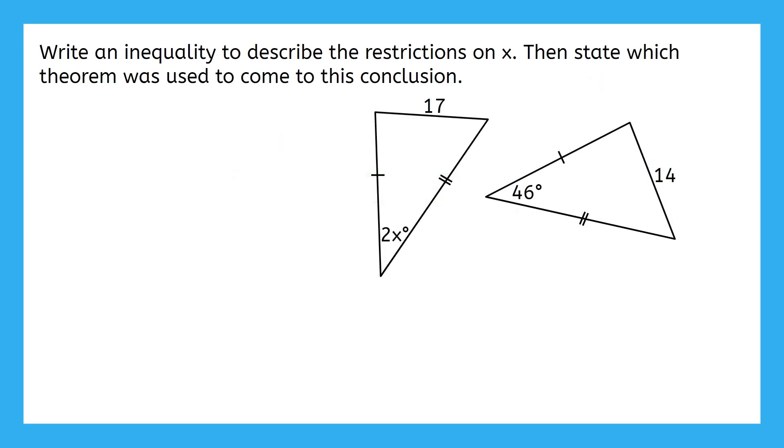This example also says to write an inequality to describe the restrictions on x. Then, state which theorem was used to come to this conclusion. Give yourself some time to try this out. Pause the video now. The triangle had two sides that were congruent to each other. And the third side length of 14 units is shorter than 17 units. This means the angle across from 14 should be smaller than the angle across from 17.